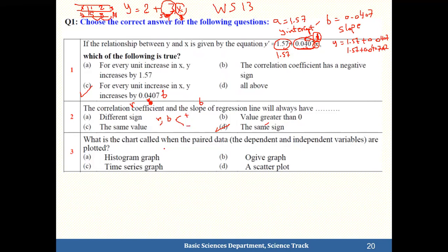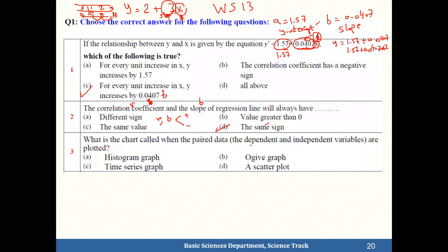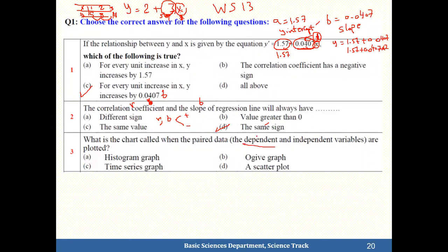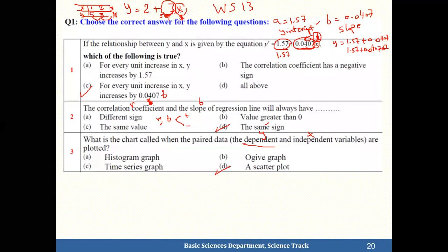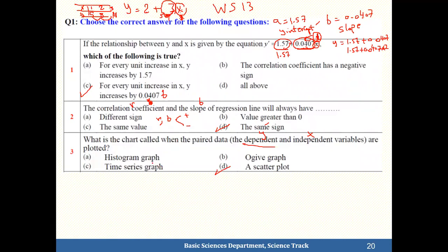Next: what chart is used when plotting dependent and independent variables? The dependent variable is y and the independent is x. The only type of chart that plots both is the scatterplot — answer D. A histogram plots frequency, and a time series plots data over time by months or years.